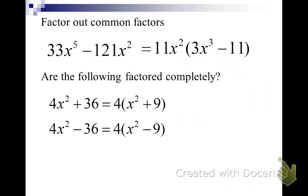But in the problem below that, it looks exactly the same. When we factor out the 4, we're going to be left with an x squared minus 9 in the parentheses. And of course, that is a difference of squares.